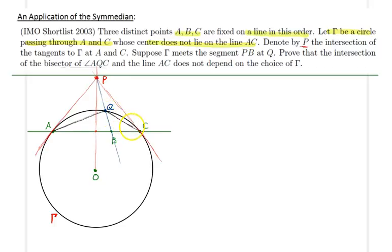So the question is to show that the bisector of angle AQC and the line AC... Let me first figure that out, call that point R. This exactly fits the definition, this construction fits the definition of the Simmedian. The Simmedian here is PB.